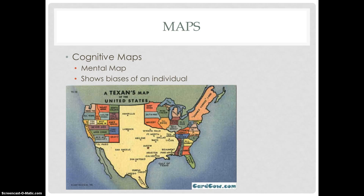An example shown below, which is slightly comical, is a Texan's map of the United States, which shows Texas as abnormally large and every other state as extremely small. That's just an example of how an individual's biases can change their own mental maps.